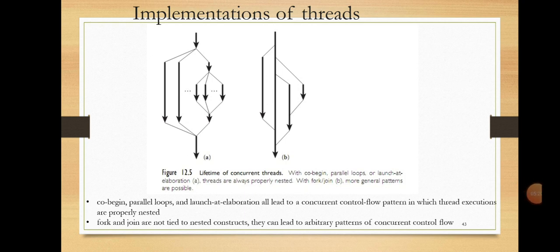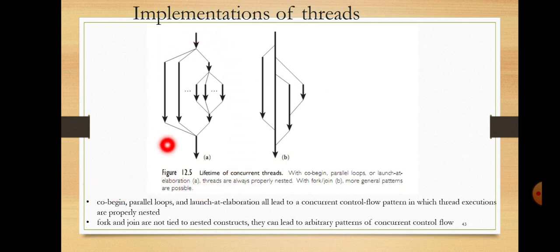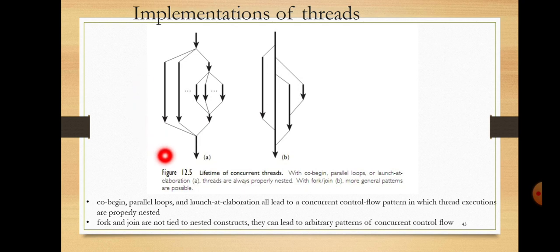This figure represents the implementation of threads. There are two diagrams. In the first diagram, threads are always properly nested. This pattern is used in co-begin, parallel loops, and dovet elaborations, because all of these lead to a concurrent control flow pattern in which thread executions are properly nested. That is why we call it co-begin/co-end or looping — it has a proper start and proper end, so the flow is structured.